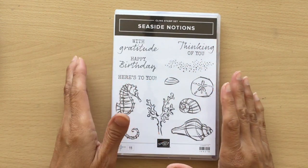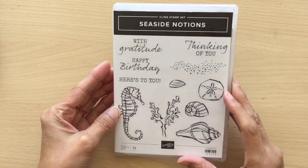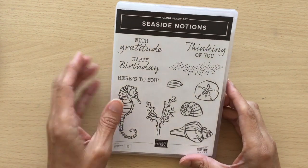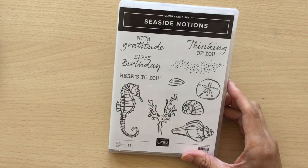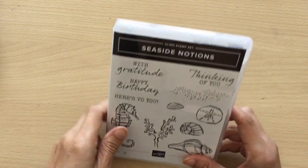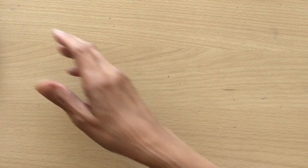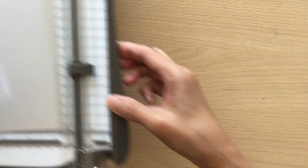I've not made it before and I saw it on Pinterest and thought I'd give it a go. I'm using Seaside Notions and I'm making this for the Cards for Gals card challenge blog. The theme is Sun, Sea and Sand.